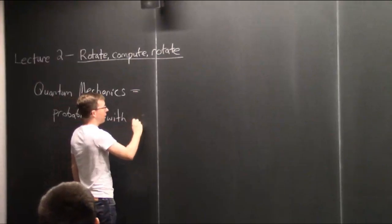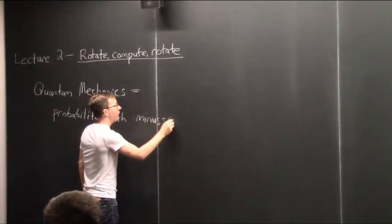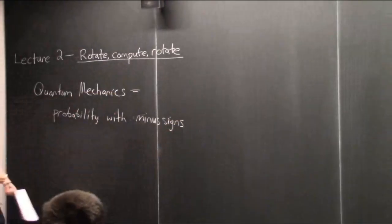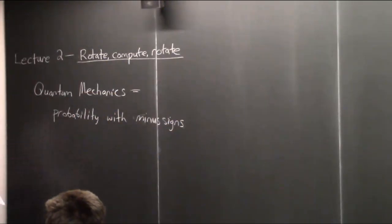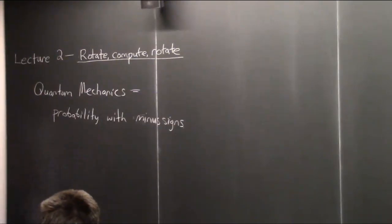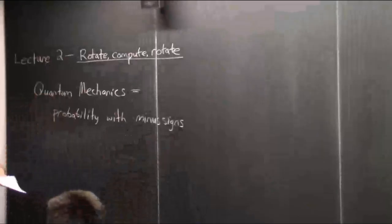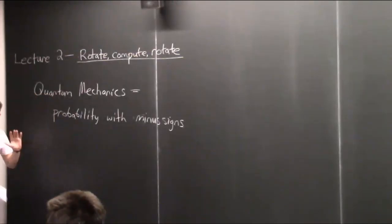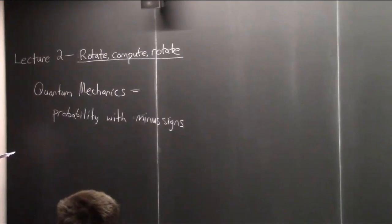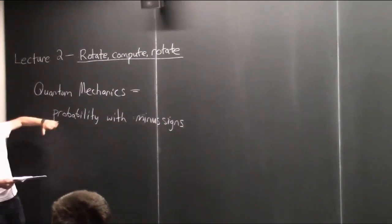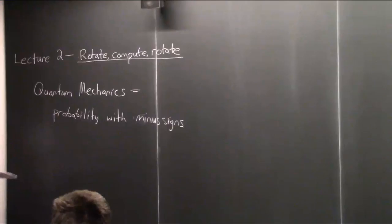Of course, probabilities are non-negative numbers. But suppose I gave you the task of inventing a generalization of probability theory where somehow the probabilities could be negative. And I said, do it in the most conservative way possible — just try to make some mathematical theory that's not crazy, but it has to have this feature, that the probabilities can be negative. Then you would invent quantum mechanics. That's what you would invent. It's the most conservative extension with this feature. This is a good way to think about the mathematical laws underlying quantum mechanics and quantum computing.